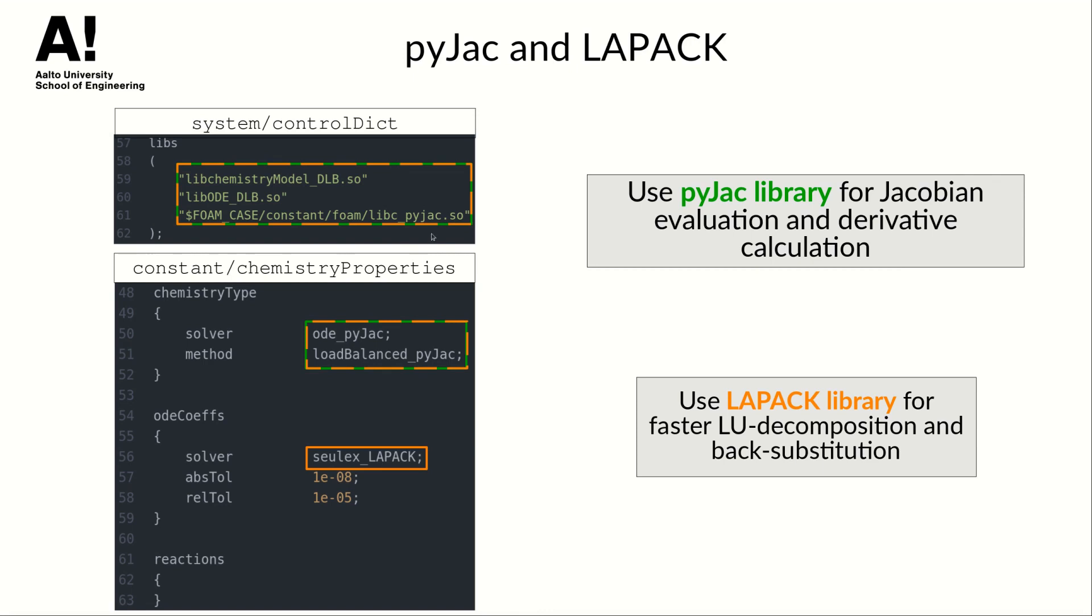And the last one is the chemical kinetics mechanism library compiled using PyJAC. And then in chemistry properties you can enable both of these features as shown on this slide.